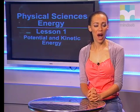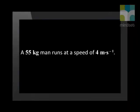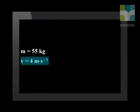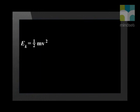Let us use the kinetic energy equation in an example. A 55-kilogram man runs at a speed of 4 meters per second. Find his kinetic energy. We list the information: mass = 55 kg, speed = 4 m/s. Writing down the formula and substituting the values: Ek = ½ × 55 × 4² = 440 joules.